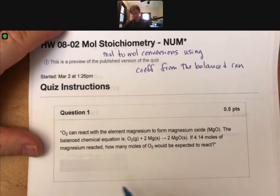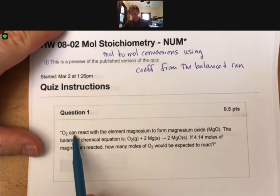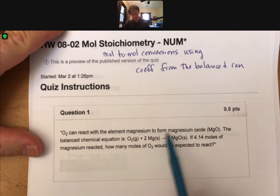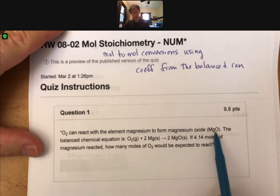As we look at the problem statement, it says O2, oxygen if you will, can react with the element magnesium to form magnesium oxide with the formula MgO.